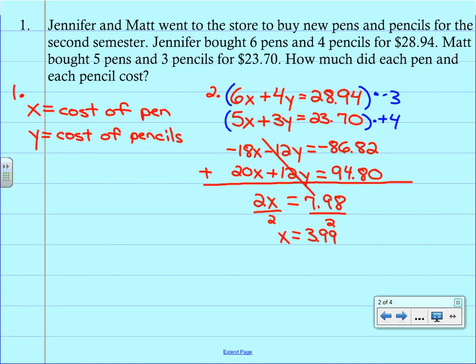Once we've solved for the cost of the pens, now we have to go and plug it back in. And there's really no better equation to plug it into. You can use any of these. But I usually tell my students, go back to the top equation. Because if you have the same process that you can use on every problem, it just becomes a little bit easier. So we're going to go back to the top equation. But make sure you go back to the original top equation before we went ahead and multiplied by that negative 3. So we're replacing X with 3.99. And then we're just going to bring everything else down. So plus 4Y equals 28.94.